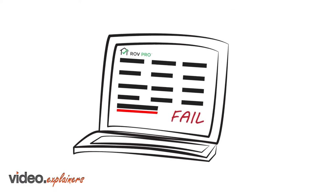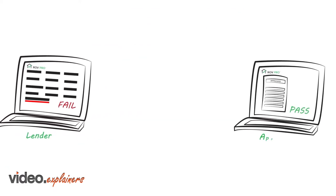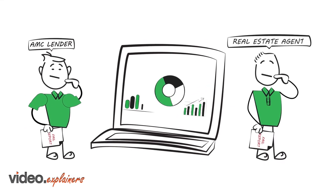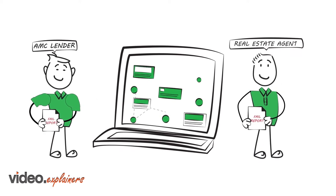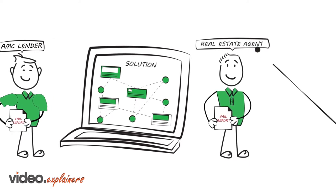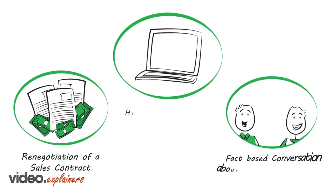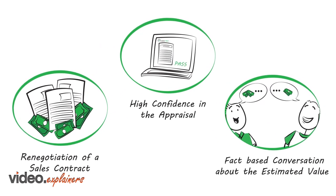If you get a fail, avoid sending the comparable to the original appraiser for review. The failed report can give a lender, AMC, or real estate agent factual database support for fast tracking other potential solutions. This may include a renegotiation of a sales contract or conversation about the estimated value with the borrower for a refinance.